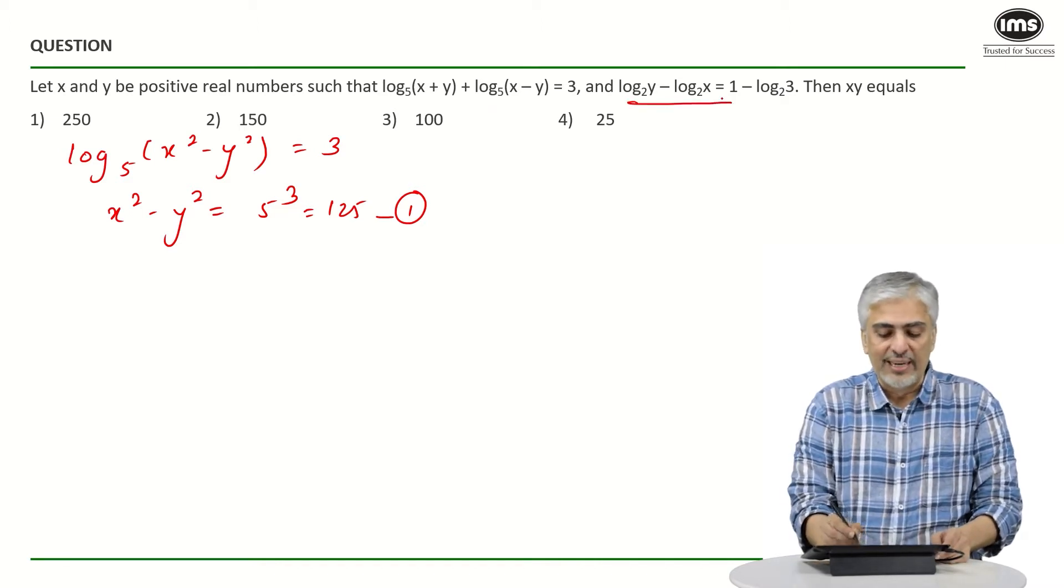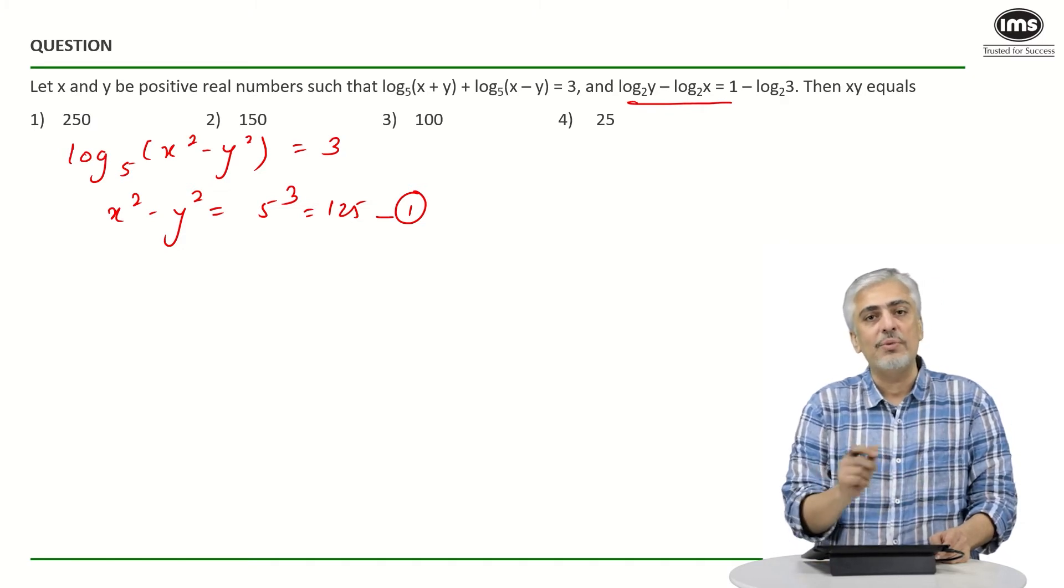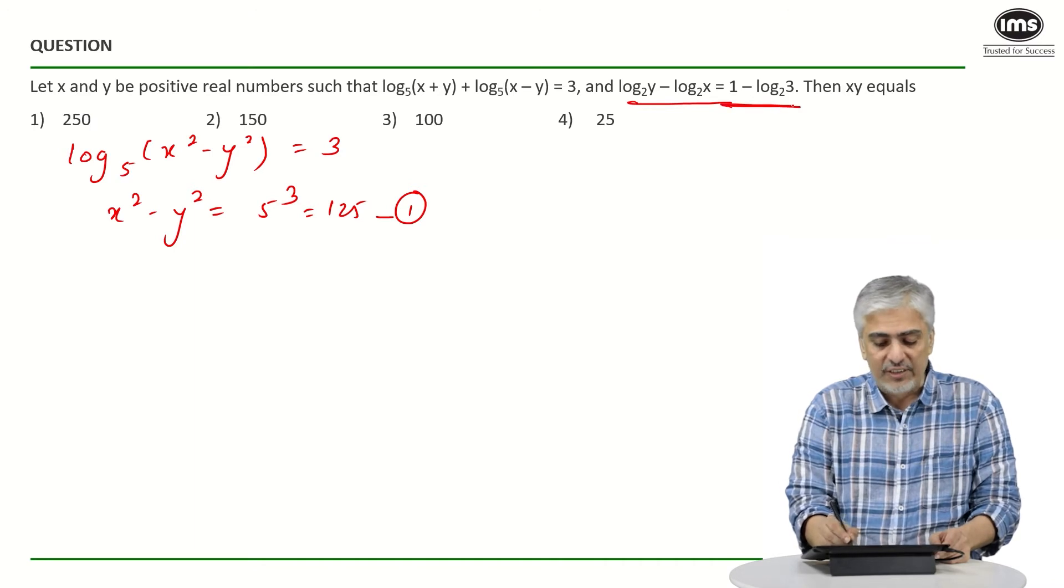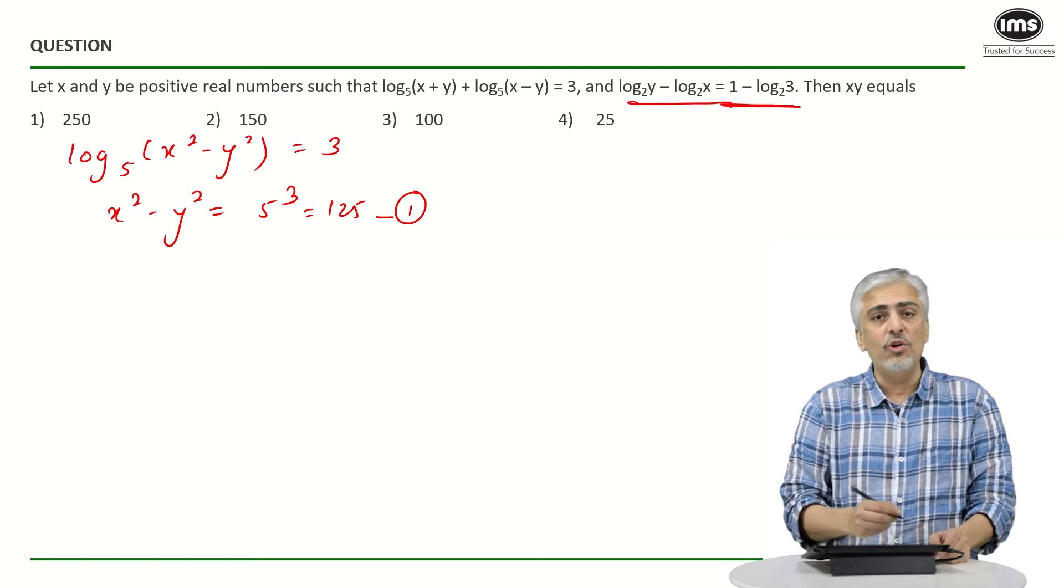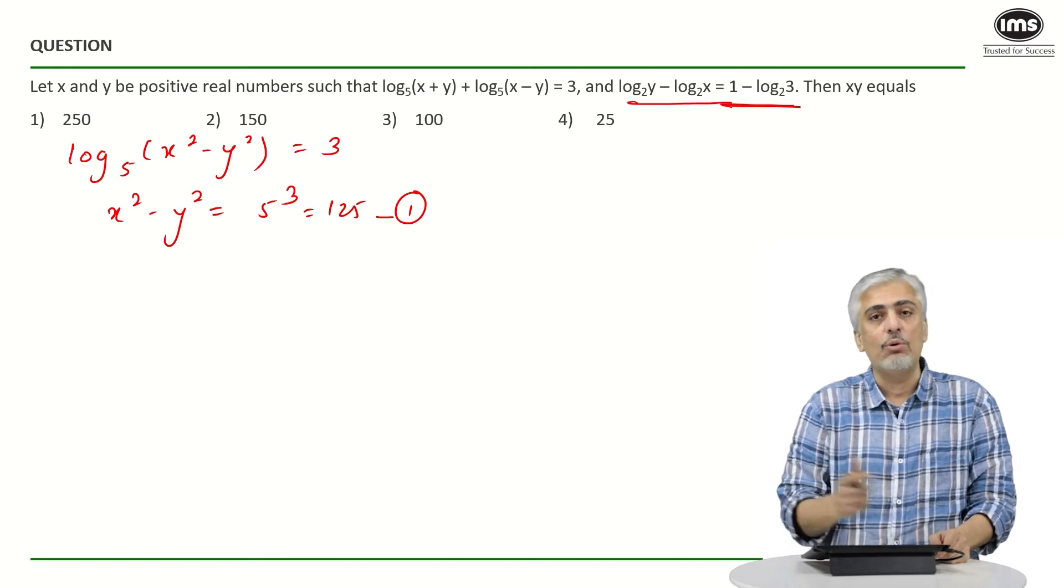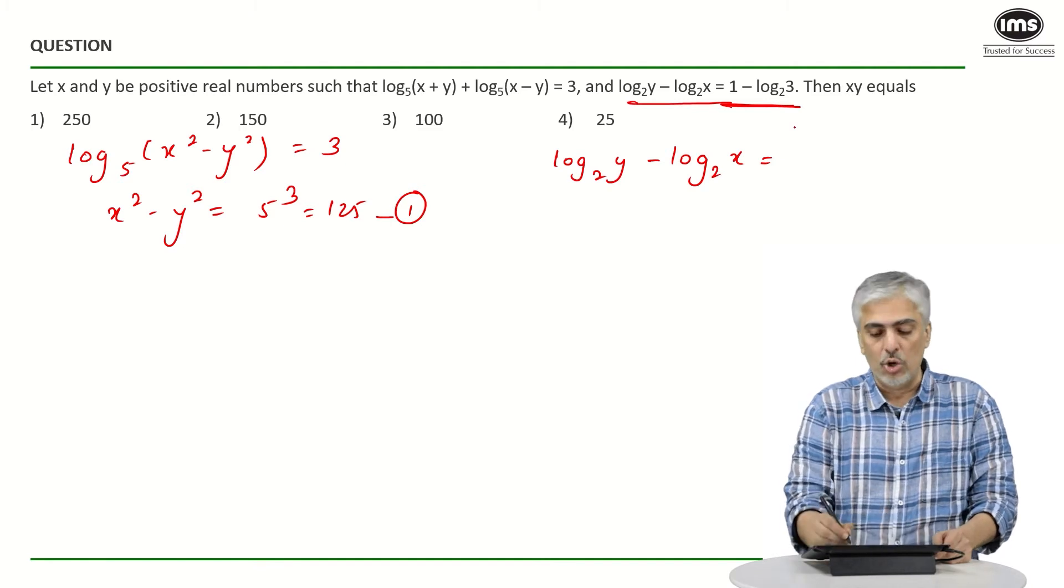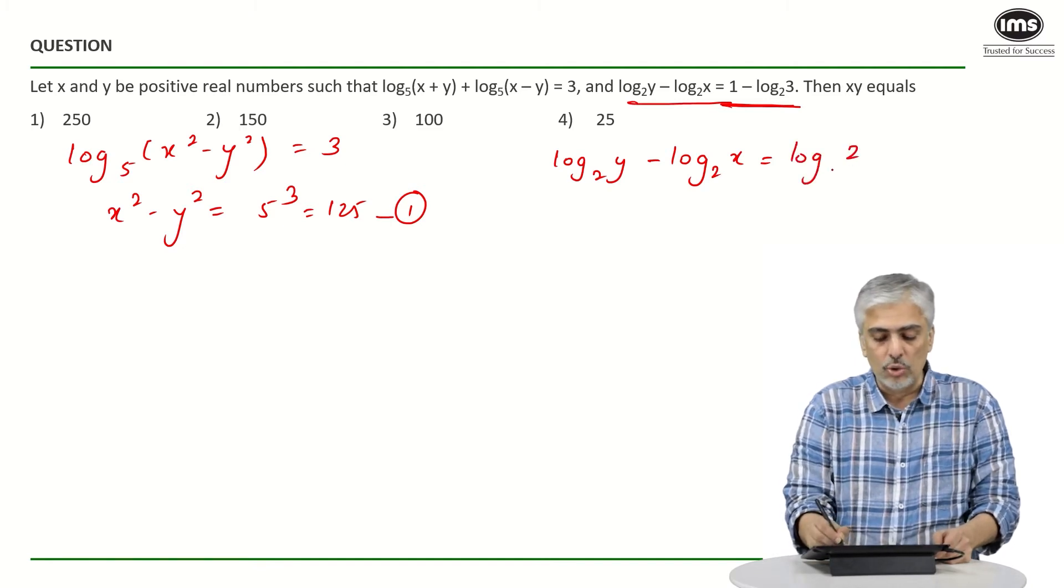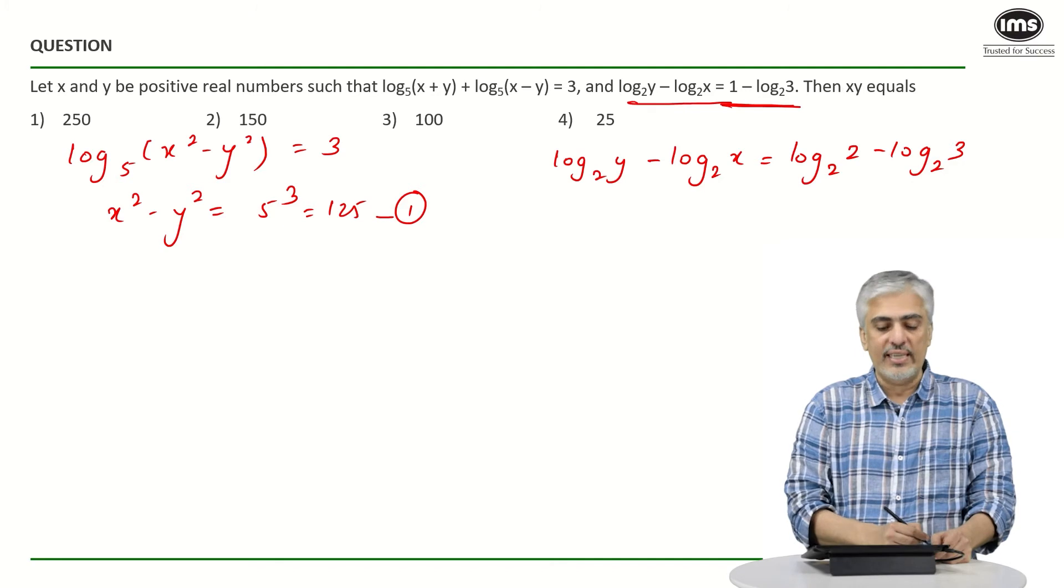Let's look at the second equation. There's a minus which means there will be a division. Log a minus log b is log(a/b). But on the right side, it's slightly different. There's a 1 minus log 3 to the base 2. So before we even convert the left hand side, let's see what we will do with the right hand side. So left side is log y to the base 2 minus log x to the base 2. 1 can be written as log 2 to the base 2. So the whole idea was to write the same base: log 2 to the base 2 minus log 3 to the base 2. Now all of them are with the same base.